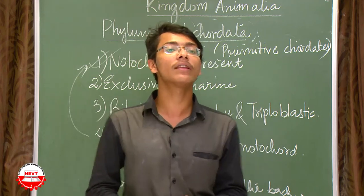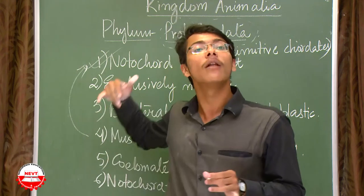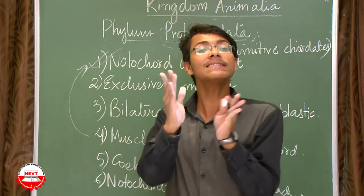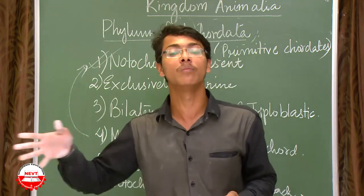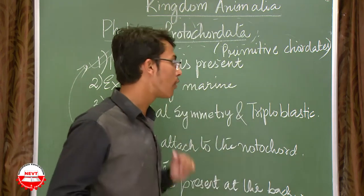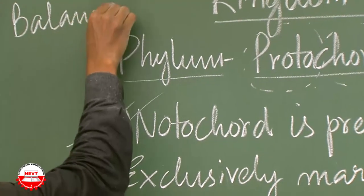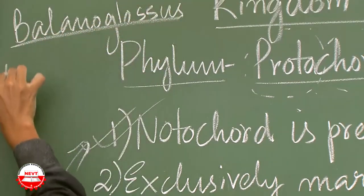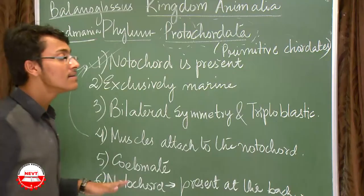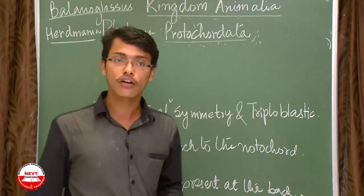To summarize Phylum Protochordata: notochord is present in the first early years of life, making them primitive chordates. They are bilaterally symmetrical, triploblastic, and coelomate. Muscles attach to the notochord, aiding movement, and the notochord is located at the back. Examples are Balanoglossus and Herdmania.